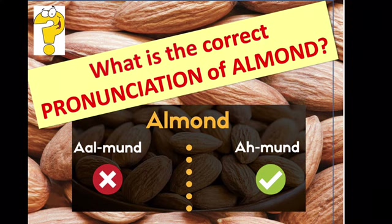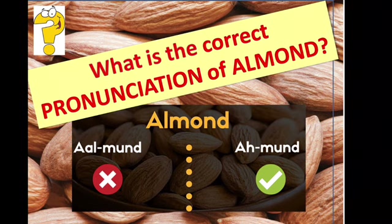Now let's talk about pronunciation. It is very important to pronounce words correctly. This dry fruit that you see in the picture, that your mom gives you almost every other day to eat, is pronounced as 'almond,' not as 'almond.' The L is silent in this word. The correct pronunciation is 'almond.'